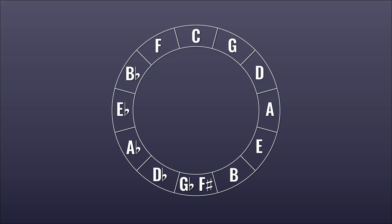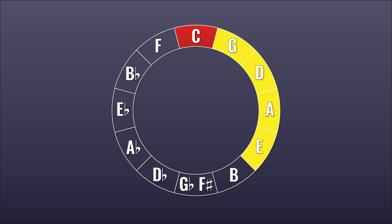So to start things off, here is a quick win. Take any note in the circle — let's take C at the 12 o'clock position. Add to it four segments clockwise, and there you have the five notes of the C major pentatonic.